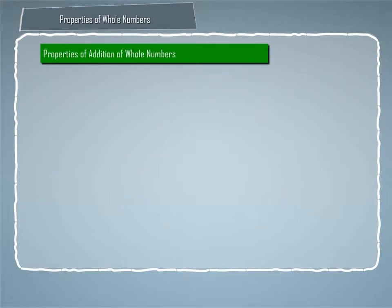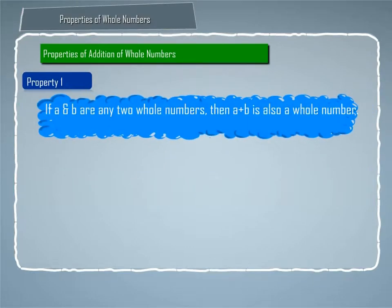Properties of Addition of Whole Numbers. Property 1: If A and B are any two whole numbers, then A plus B is also a whole number. This is known as closure property of addition.